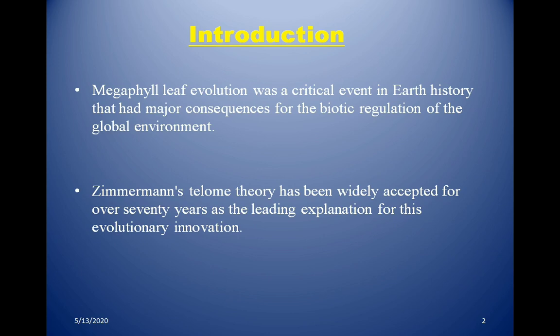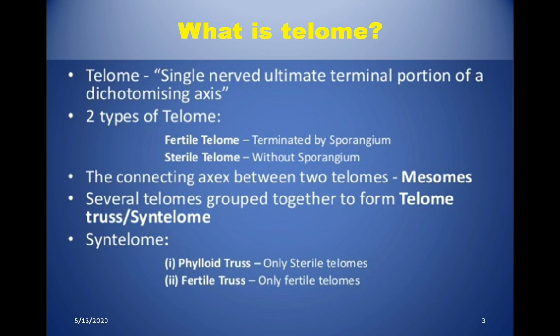According to this theory, all vascular plants evolved either directly or indirectly from a simple leafless rhynia plant. A telome is a single node — the ultimate terminal portion of a dichotomizing axis. It is the point from the most distant dichotomy to the tip of a branch.